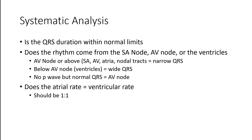If we see a normal-looking P wave before every QRS, we can say that looks normal — meaning the SA node is controlling what's happening downstream in the ventricles.